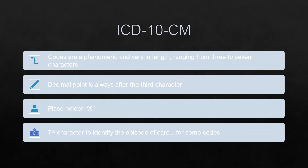ICD-10-CM codes range from 3 to 7 characters in length. The length is determined by the requirements for each code, and typically longer codes contain more detail than shorter codes, as each additional character adds more detail to the code description. No matter the code length, a decimal point is always placed after the third character in the code, and additional characters are placed after the decimal point. You can add as many additional characters as needed in order to code to the full extent as determined by the ICD-10-CM guidelines.